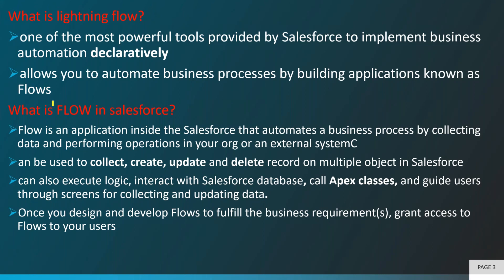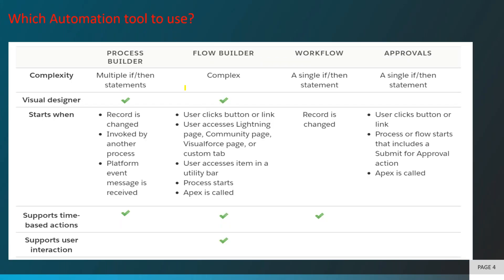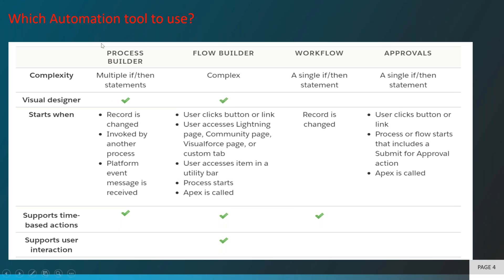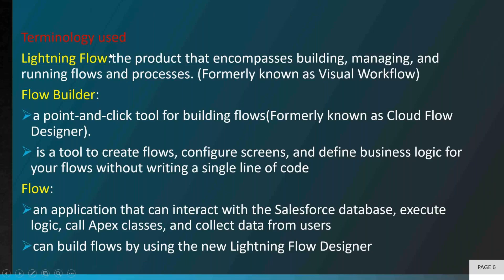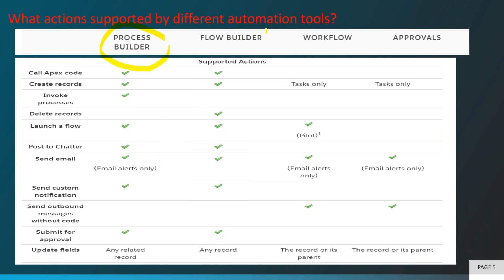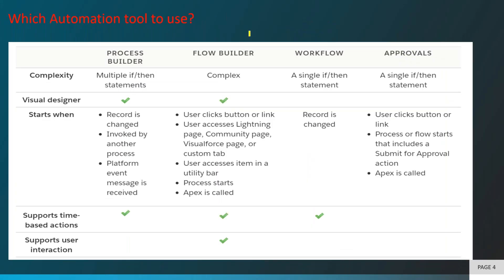Now let's look at the various automation tools we have, like Process Builder and Lightning Workflow. There are many tools available, so we need to decide which automation tool to use at what time. We have Process Builder, Flow Builder, Workflow, and Approvals, and we'll evaluate them based on different parameters to determine which one suits which type of requirement.